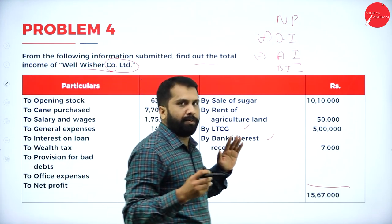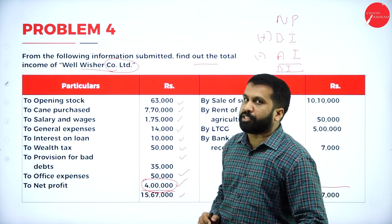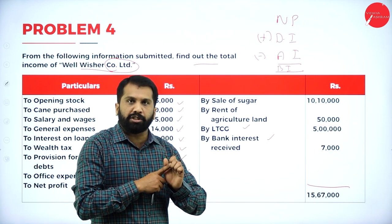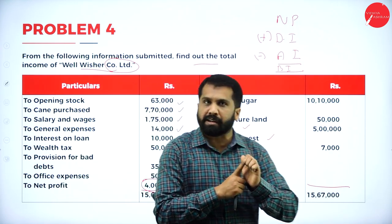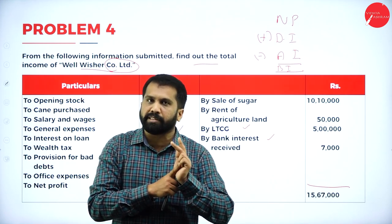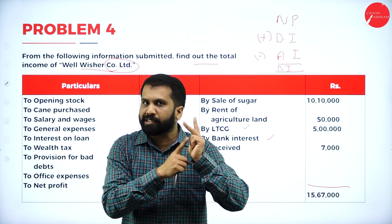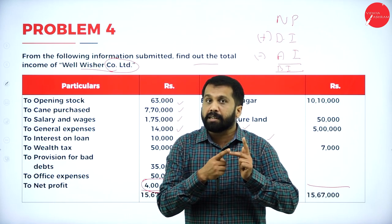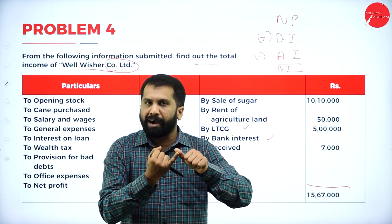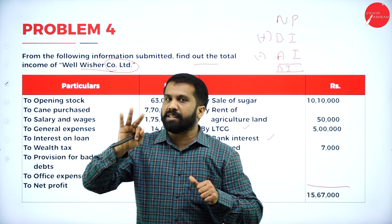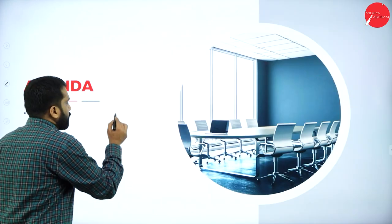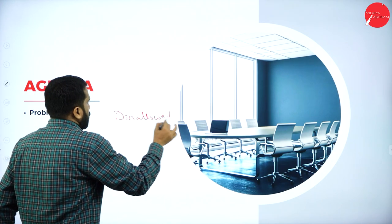Now, which are disallowed items? I already gave you the list. Remember: any reserves, any provisions, donations, depreciation if there is an adjustment. If it is not an adjustment, we will not take depreciation. Any personal expenses. Tax — in the sense of income tax, wealth tax, municipal tax. VAT, excise duty, GST are NOT disallowed — these are part of the business and we are not supposed to disallow them.